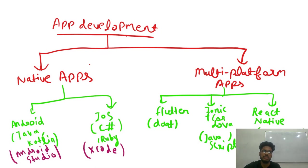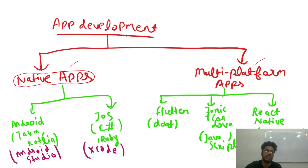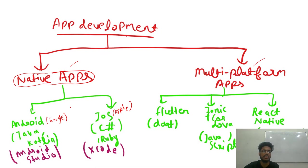Firstly, let me explain what app development is. Basically, an app can be developed in two forms: the native app or the multi-platform app. Native apps have more closeness to the operating system, like Android or iOS. iOS is Apple, and Android is by Google. Native apps are designed specifically for each operating system — for Android it is designed specifically for Android, and for iOS specifically for iOS.